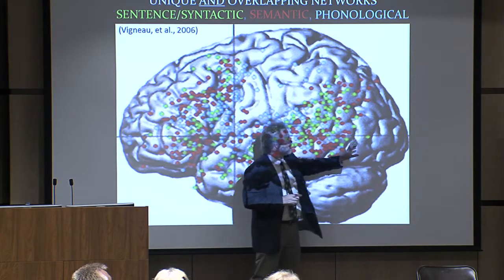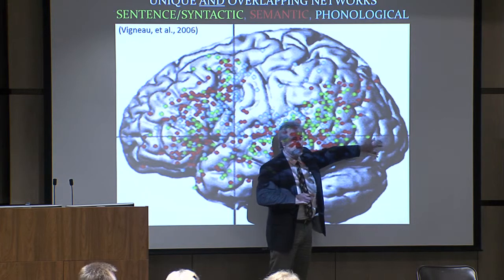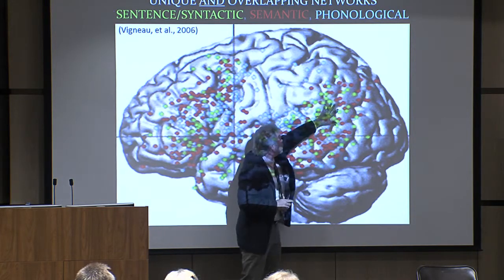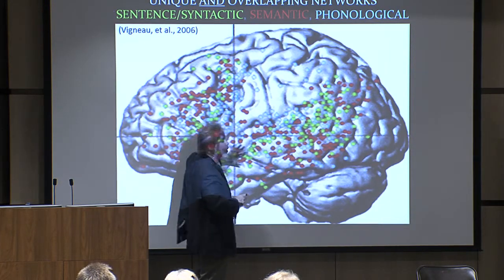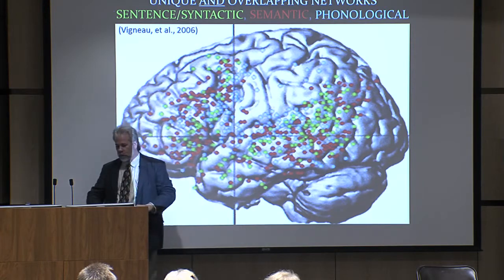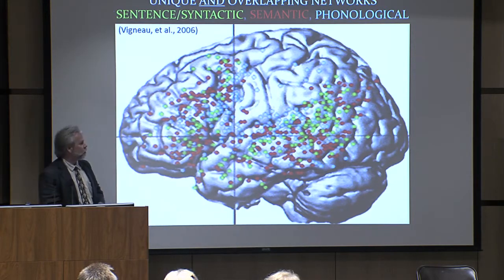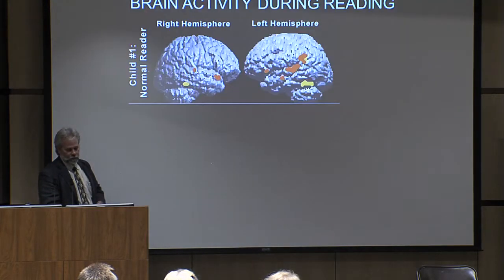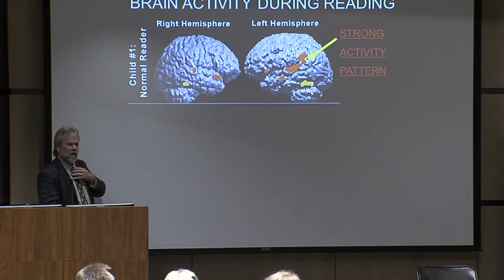It is region-specific, because it's not all back here and there's not much activity up here — it's right through these primary language and speech cortex areas. So when the brain's working efficiently, those parts are supposed to be doing most of the work. Here's that normal reading child: strong activity on the left side.